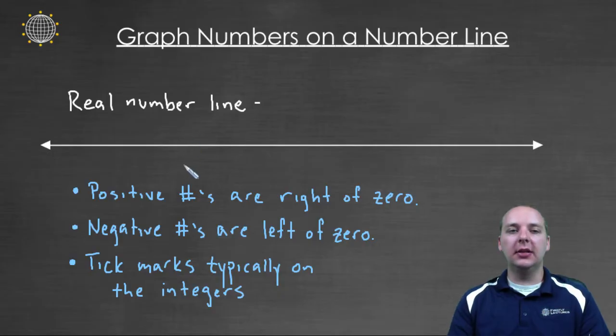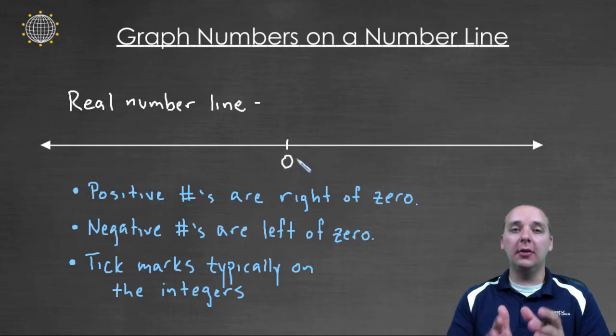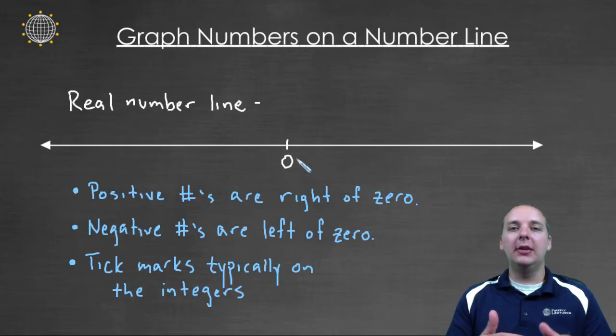So basically it looks like this. Basically you have zero in the middle of your number line, and then all the positive numbers are listed to the right of zero, and all the negative numbers are listed to the left of zero. And just as points of reference, we usually put tick marks on all the integer values.